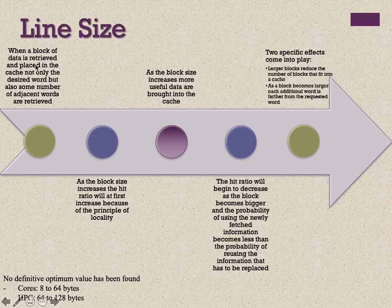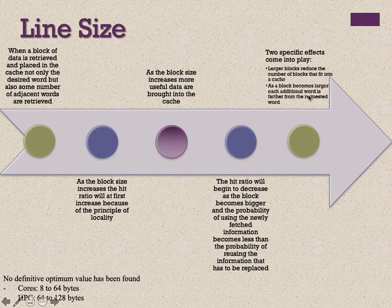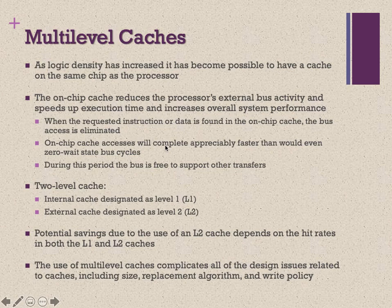When a block of data is retrieved and placed in the cache, not only the desired word but also adjacent words are retrieved. As block size increases, the hit ratio will initially increase due to the principle of locality, as more useful data is brought in. However, as the block becomes larger, the hit ratio will begin to decrease, because the probability of reusing newly fetched information becomes less than the probability of reusing information that had to be replaced. Larger blocks also reduce the number of blocks that fit into a cache.